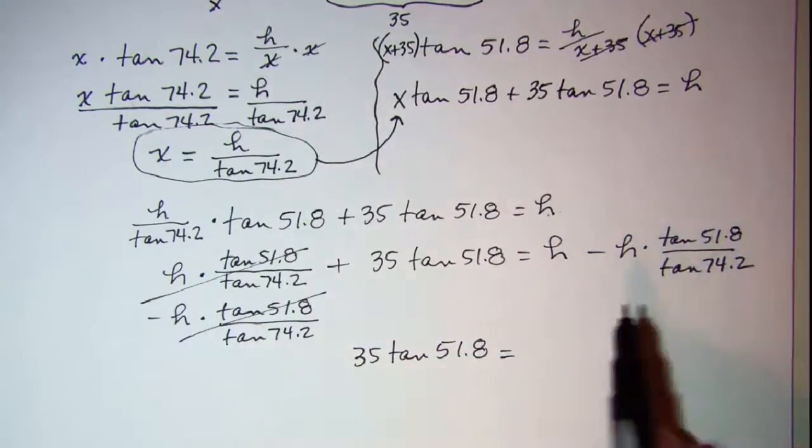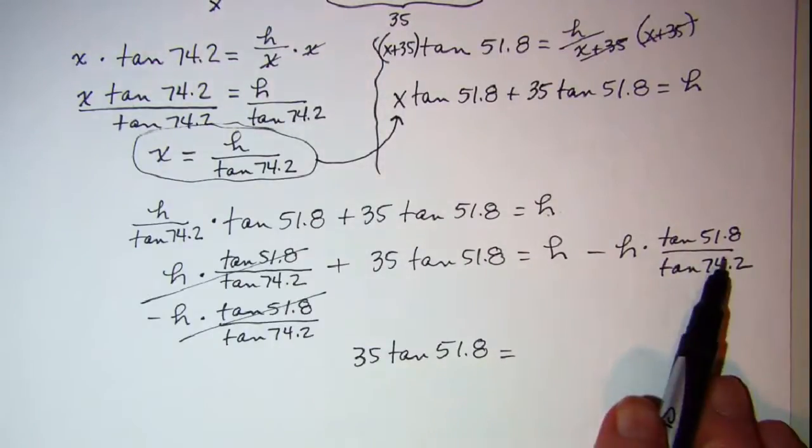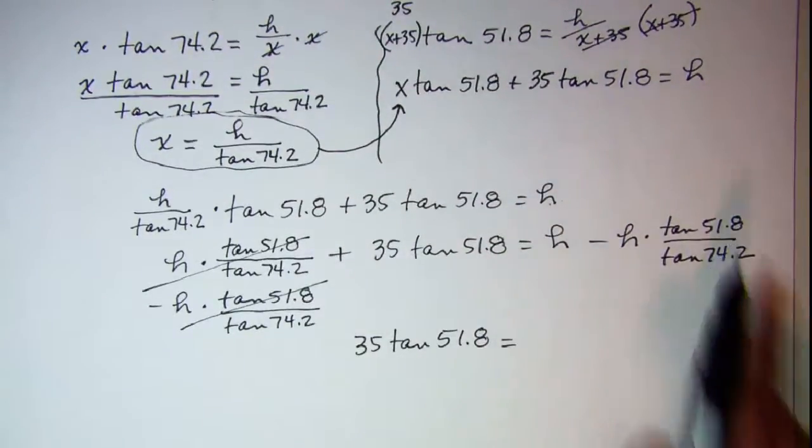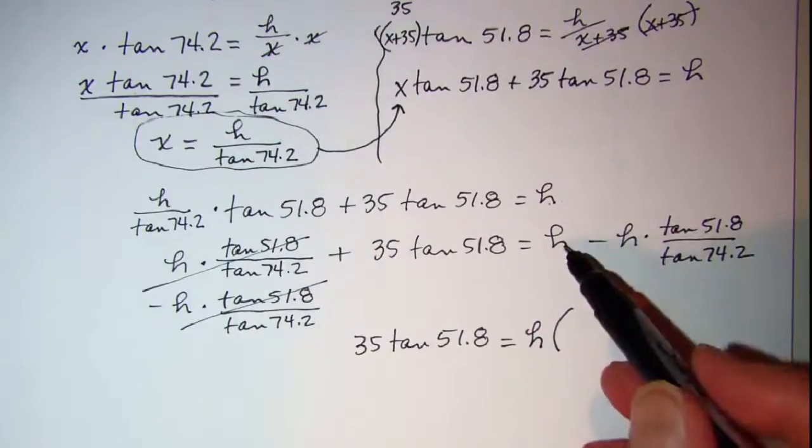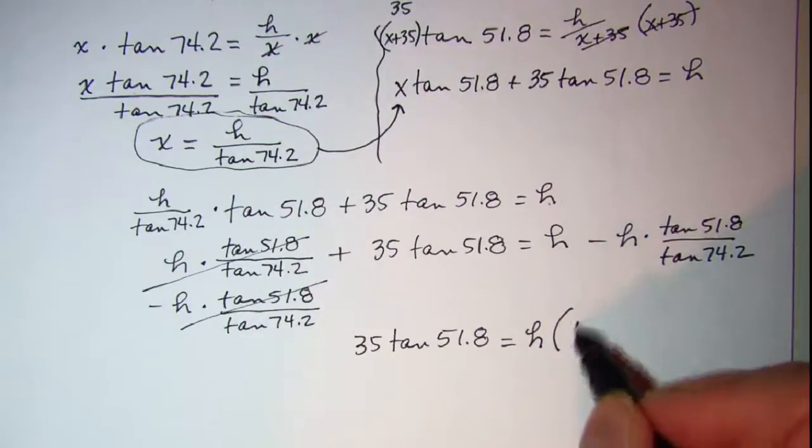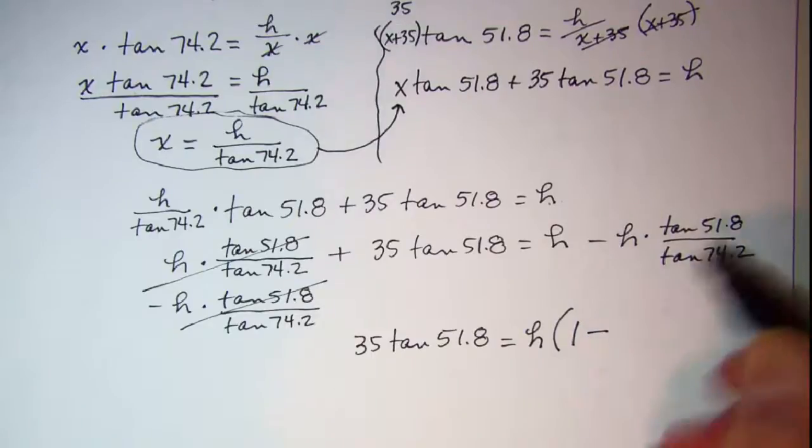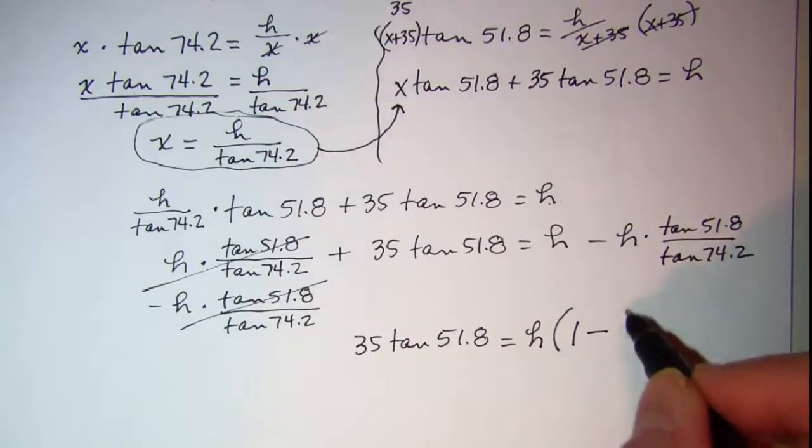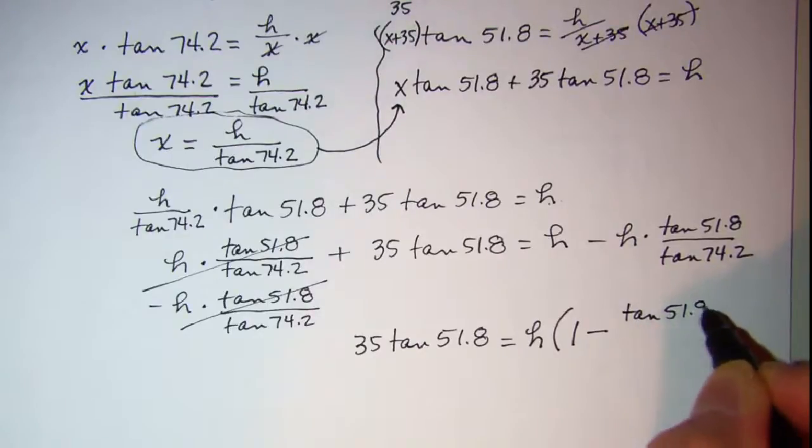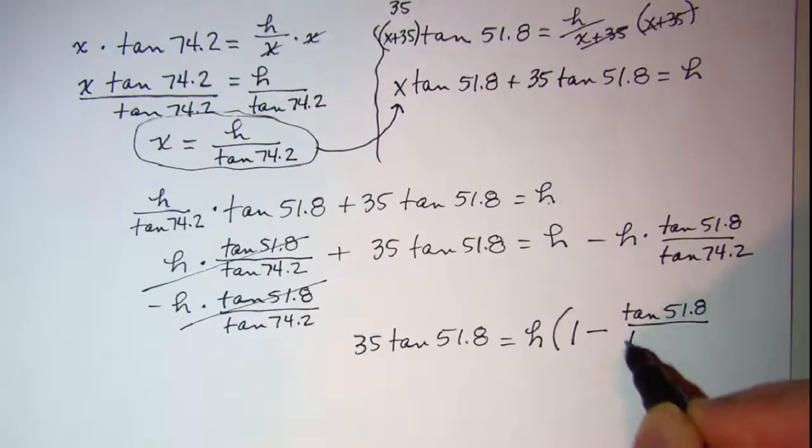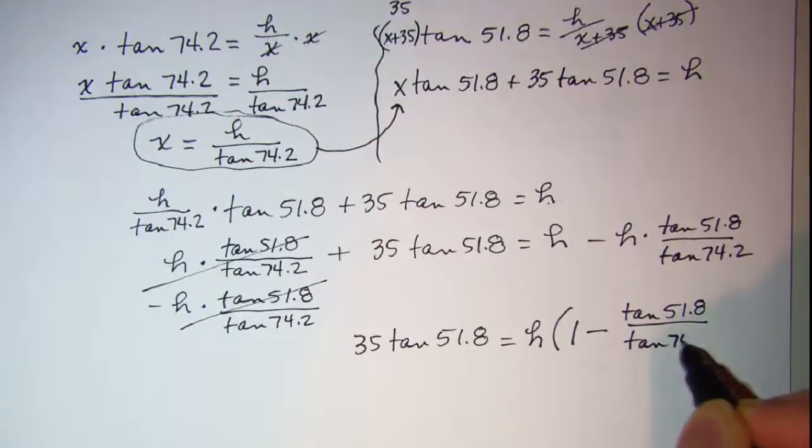On the left I have 35 tangent 51.8. On the right I have two terms. They both have an H in them, so I'm going to factor H out. And I'm left with 1 in the first term and then minus this quotient: tangent 51.8 divided by tangent 74.2.